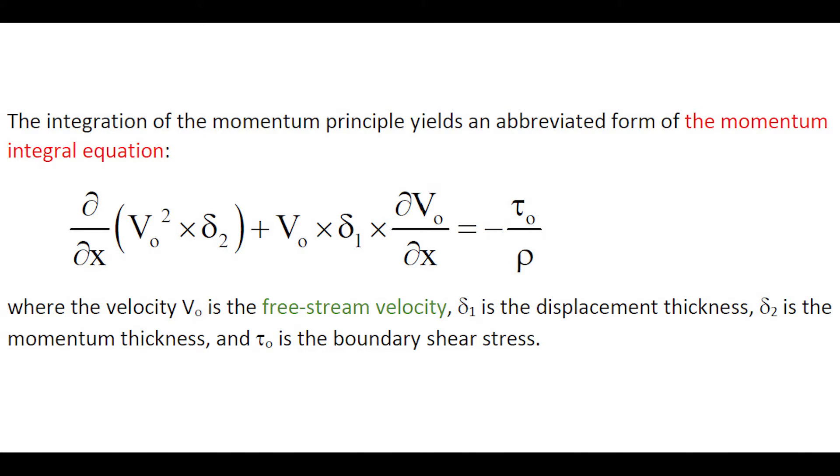The integration of the momentum principle yields an abbreviated form of the momentum integral equation shown here, where v0 is the free-stream velocity, delta 1 is the displacement thickness, delta 2 is the momentum thickness, and tau 0 is the boundary shear stress.